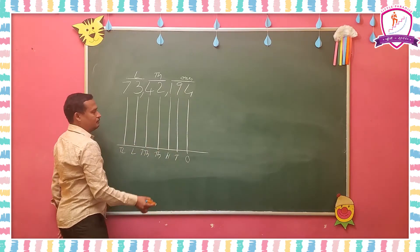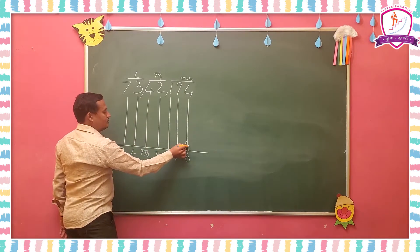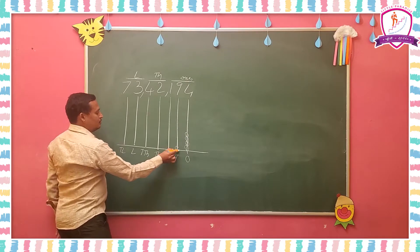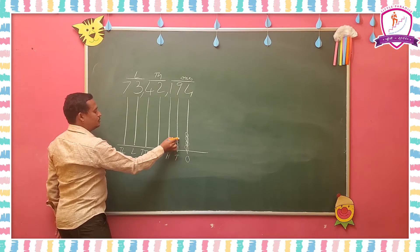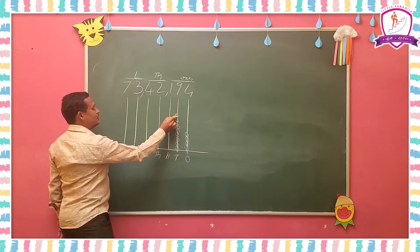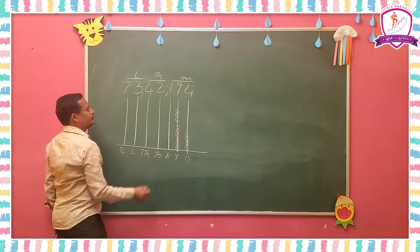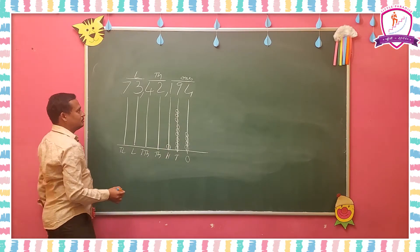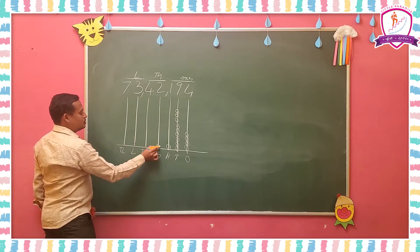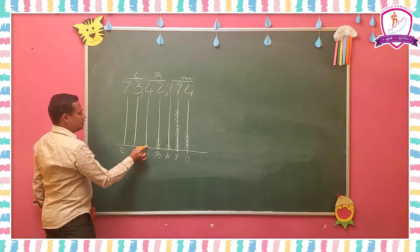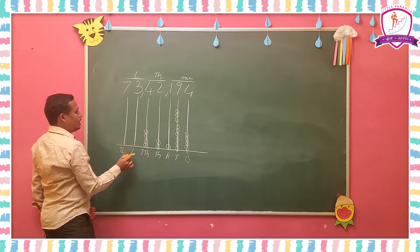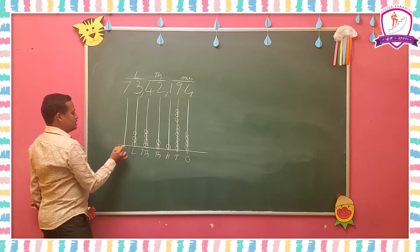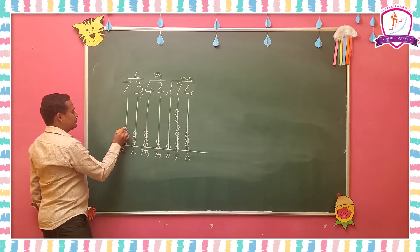In the 1s place, 4 is there, so 4 bits you have to draw. In the 10s place, 9 bits — 1, 2, 3, 4, 5, 6, 7, 8, 9. In the 100s place, 1 bit you have to draw. In 1000s, 2 bits; in 10,000s, 4 bits; in lakhs, 3 bits; and in 10 lakhs, 7.